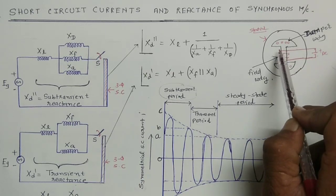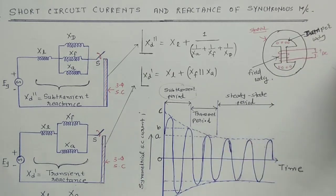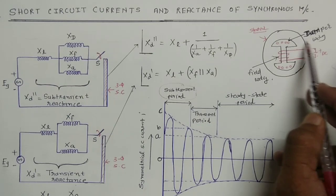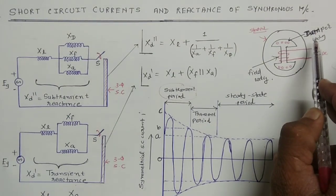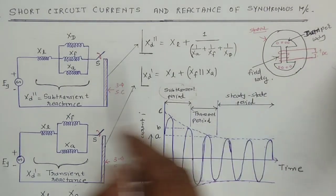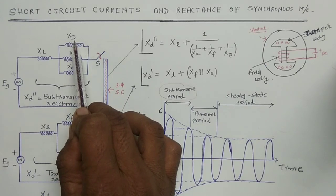In the case of alternator, damper winding is used for reducing hunting effect. And in synchronous motor, we know that the synchronous motor is not self-started, so the purpose of damper winding in synchronous motor is for self-starting, and it also reduces the hunting effect. Due to the presence of damper winding, it has some reactance — that is damper winding reactance XD.